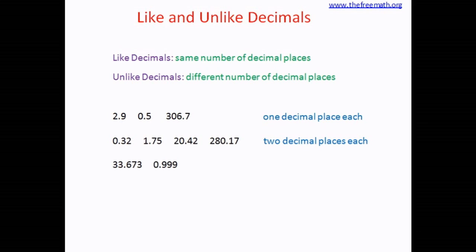In the next example, there are three decimal places. The numbers are 33.673 and 0.999. That means these two decimals are also like decimals.